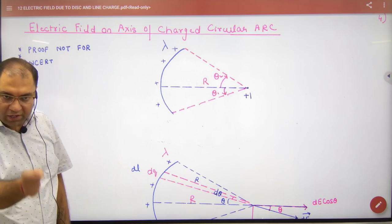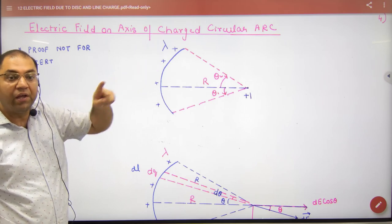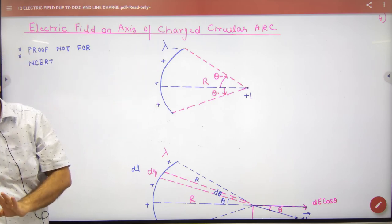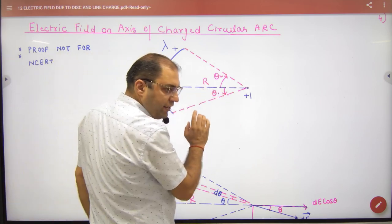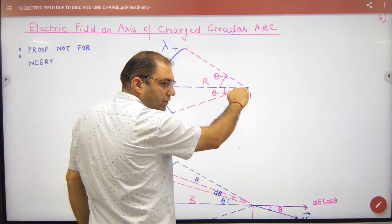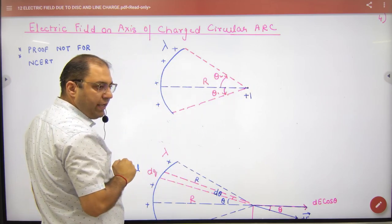Since rod is lengthwise distribution charge, we will use linear charge density lambda. So density is lambda, you have this radius r given, this x-axis, and the arc is making theta 2 and theta 1.